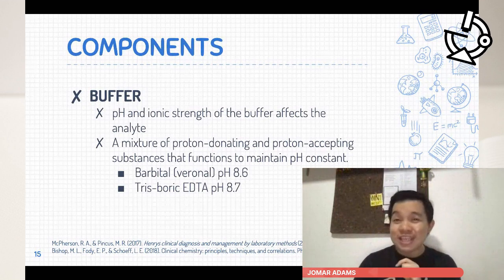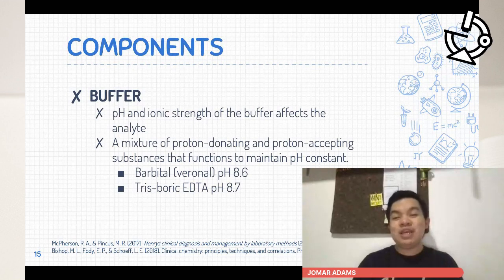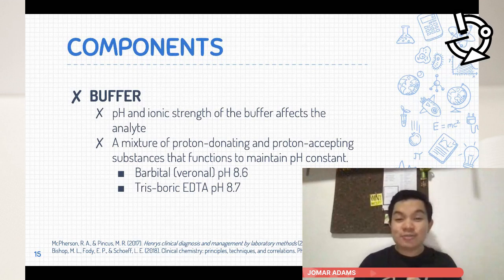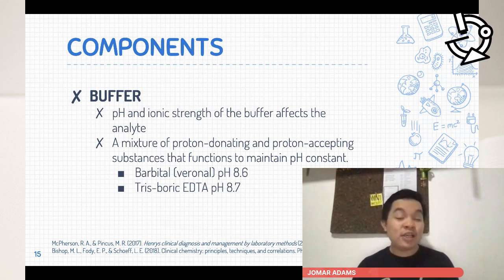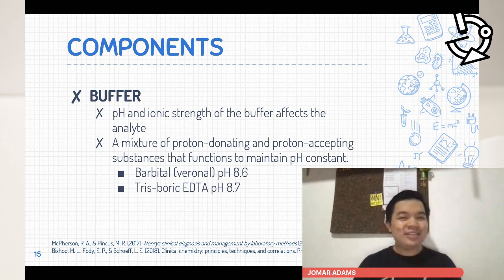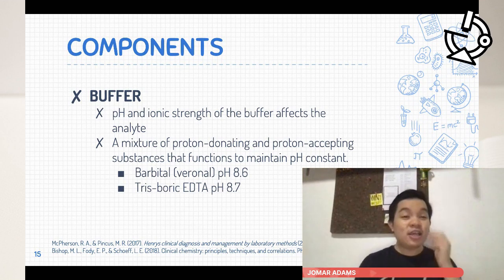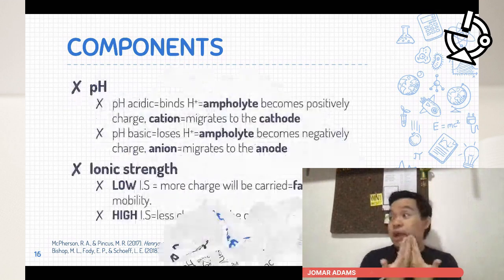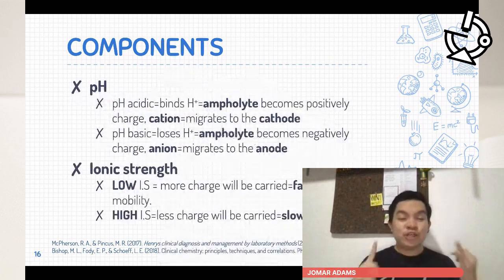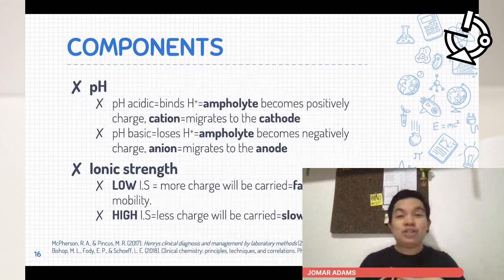In its simplest term, the buffer is a mixture of proton-donating and proton-accepting substances that functions to maintain pH at a constant. Commonly used buffers include barbital or veronal buffer at pH 8.6, and tris-borate EDTA at pH 8.7. EDTA stands for ethylene diamine tetraacetic acid.